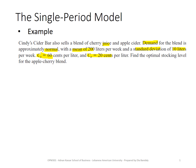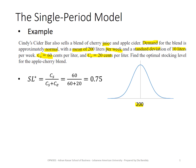A quick note: the selling season here is one week, because the demand is given per week. Demand follows a normal distribution with a mean of 200, and the optimal service level can be found using the equation we learned before, giving an optimum service level of 0.75.